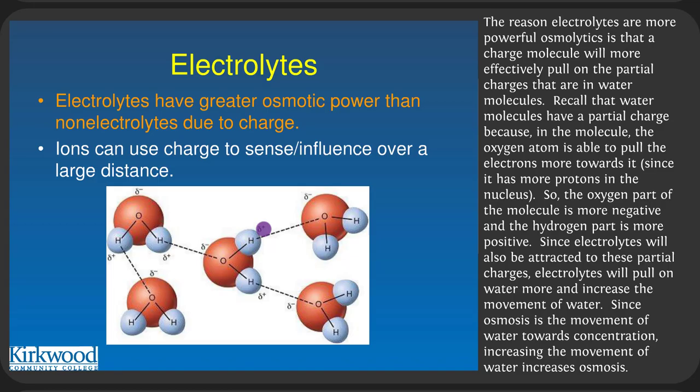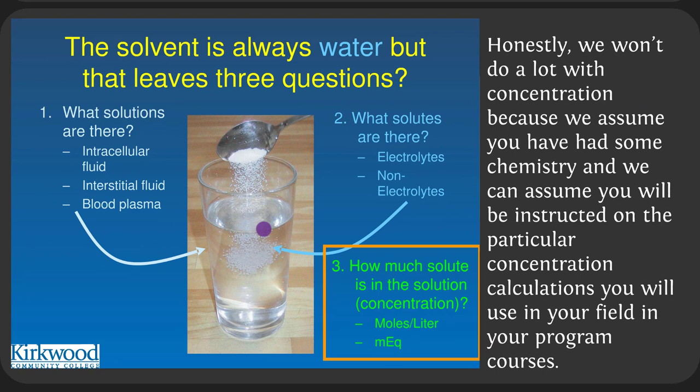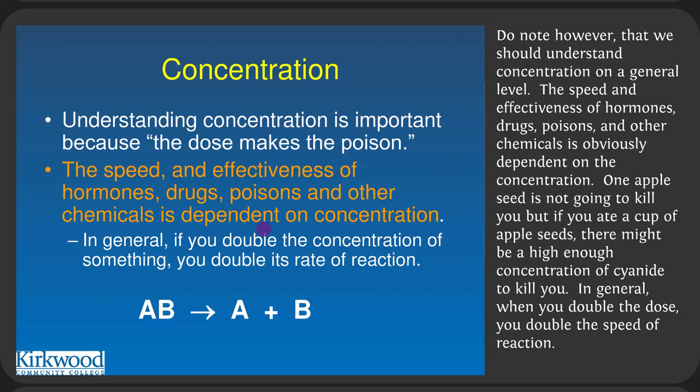Electrolytes will pull on water more and increase water movement, thereby increasing osmosis. We don't focus heavily on concentration calculations, as we assume you've had chemistry or will be instructed on specific calculations in your program. Do note that the speed and effectiveness of hormones, drugs, poisons, and other chemicals is dependent on concentration. One apple seed won't kill you, but a couple of apple seeds might contain a high enough concentration of cyanide to kill you. In general, when you double the dose, you double the speed of a reaction.